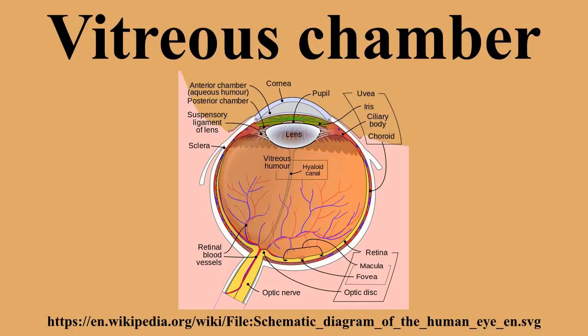Both the anterior and posterior chambers are located within the anterior cavity, while the vitreous chamber is located in the posterior cavity. The best way to distinguish between the two cavities is to use the lens as a dividing point. The vitreous chamber is the largest of the three chambers and is located behind the lens and in front of the optic nerve. This chamber is filled with a thick, clear gel-like substance called the vitreous humor.